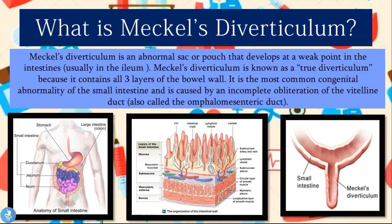Looking at the first image, Meckel's Diverticulum occurs in the ileum, which is the last part of the small bowel. We have the duodenum, the jejunum, and the ileum, and Meckel's Diverticulum is found in that last part. The small bowel is made up of a series of layers — in this cross-sectional view we see the innermost layer which is the mucosa, then the submucosa, the muscular layer, and the serous layer. Meckel's Diverticulum is a true diverticulum, meaning it involves all layers of the small intestine wall.